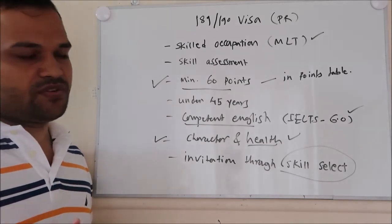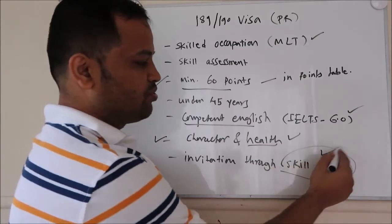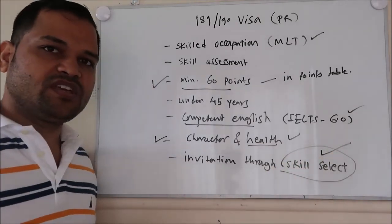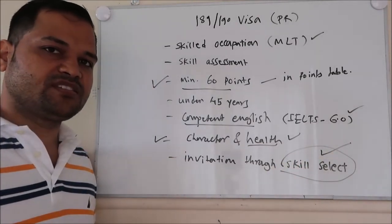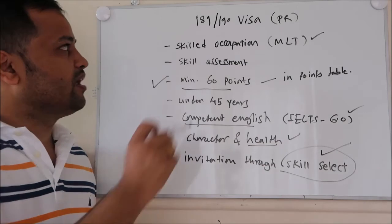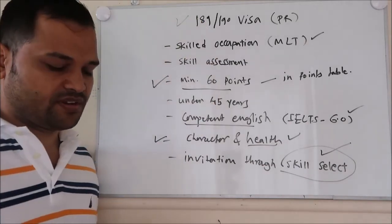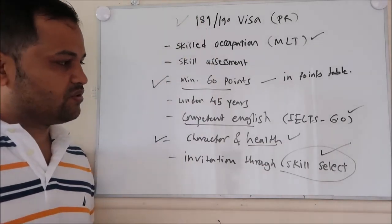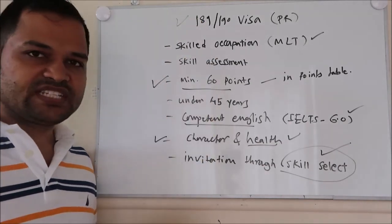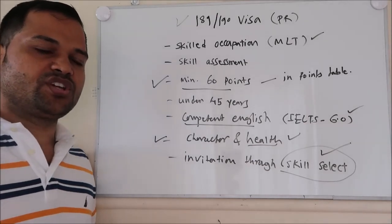So there are two steps. First, get the invitation through SkillSelect. Once that step is done, step number two is to apply for the visa on the website. I have provided all the important links down in the description — you can check them out.